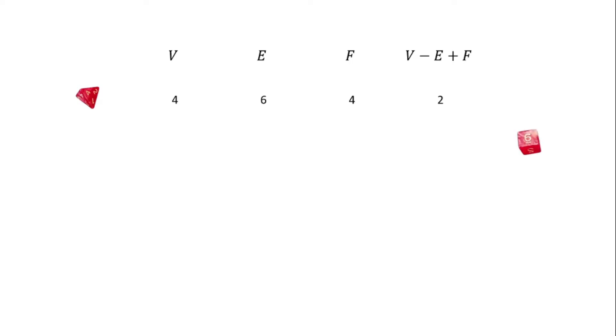For the six-sided die, the cube, there are eight vertices, twelve edges, six faces, and again eight minus twelve plus six equals two. And the formula remains true for the rest of them.